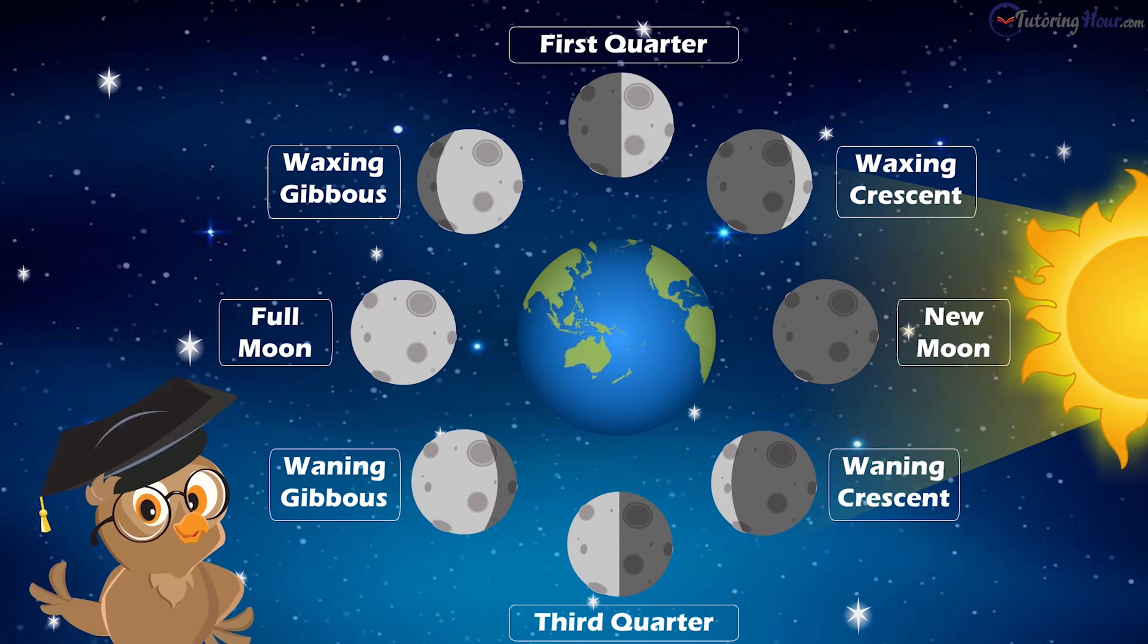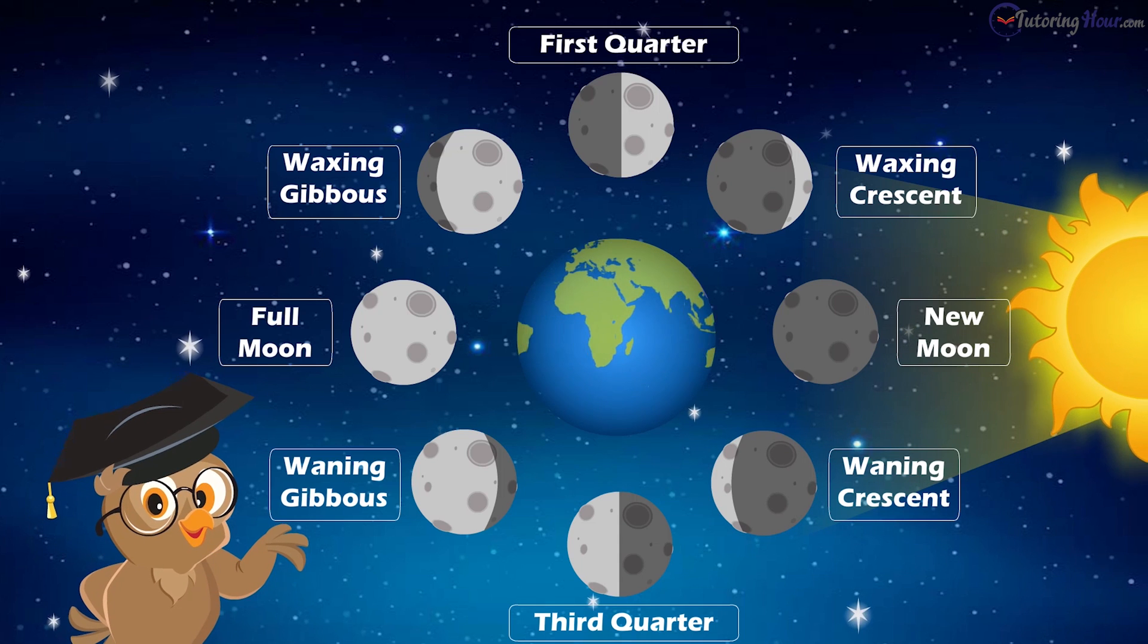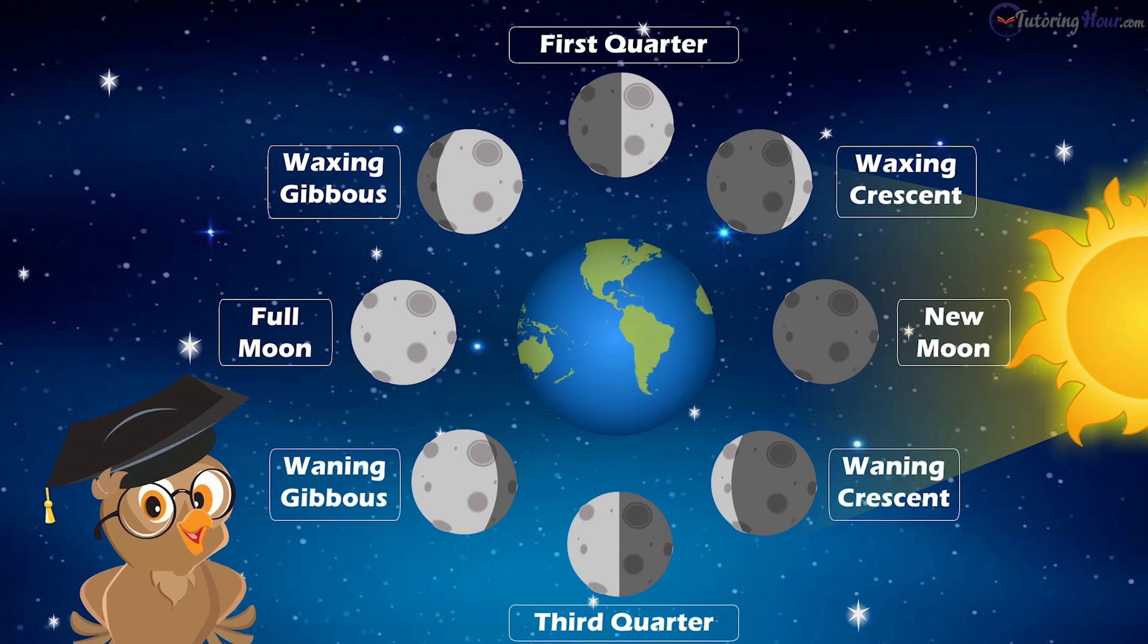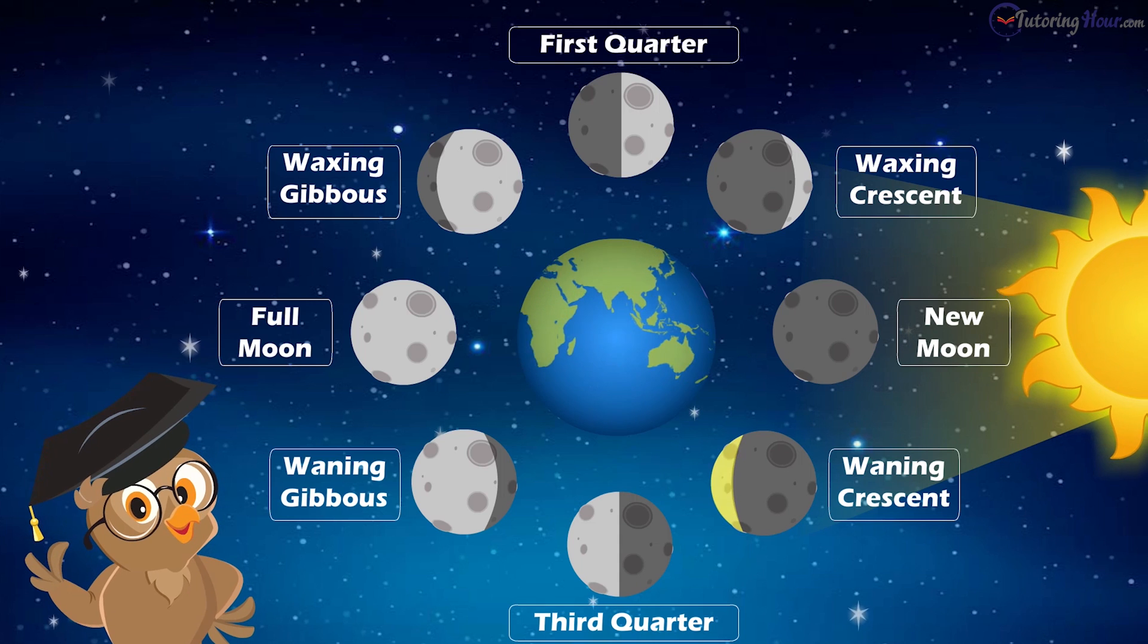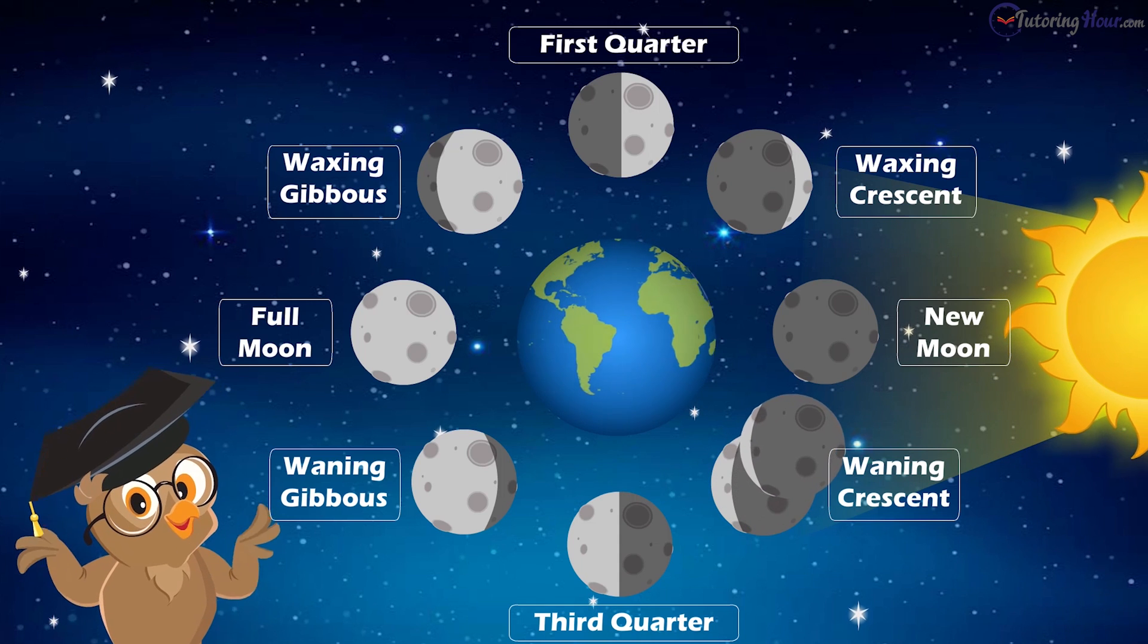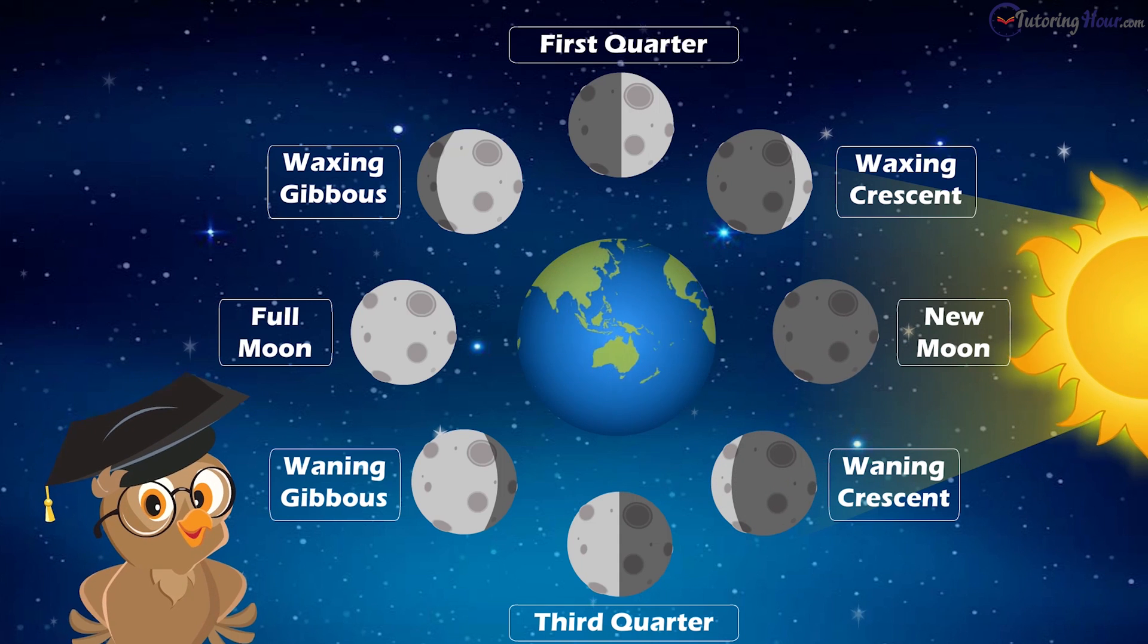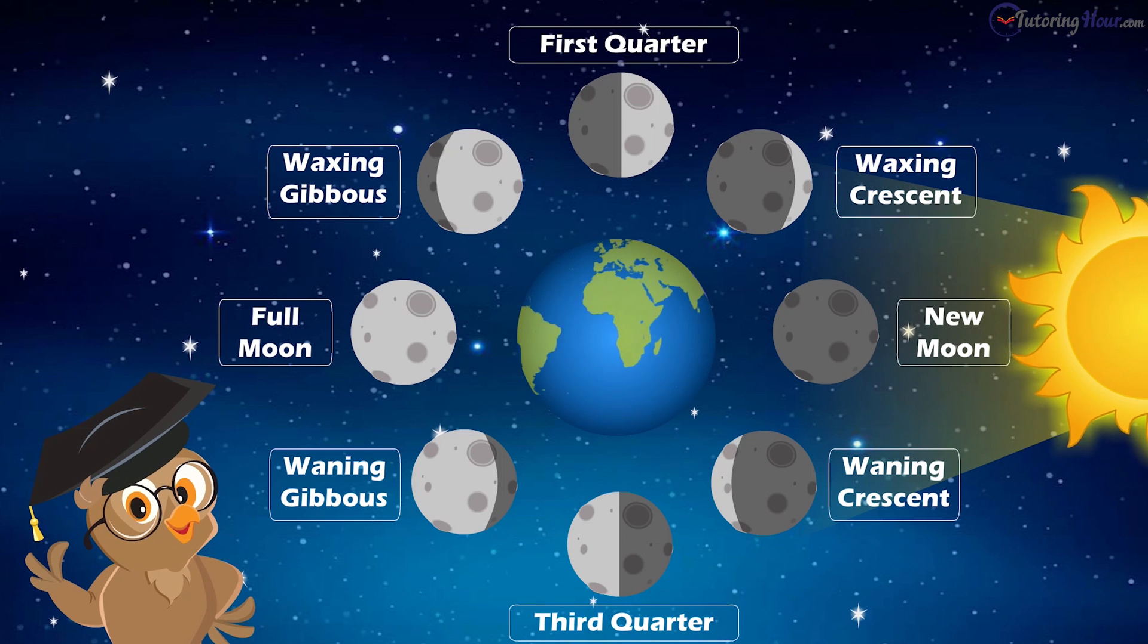The eighth phase is the waning crescent. We see the waning crescent phase as a thin crescent of light. Then the moon disappears completely, and we have the new moon again.